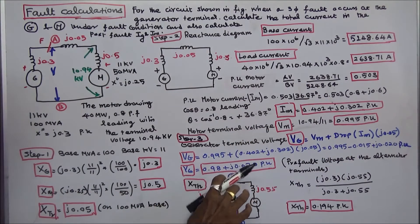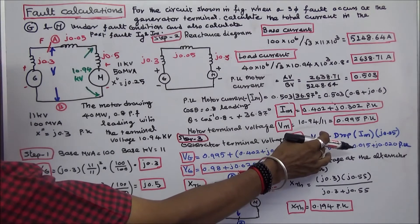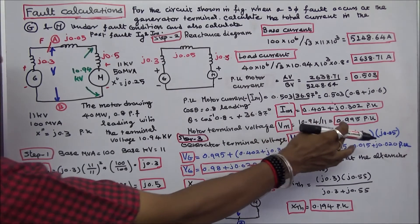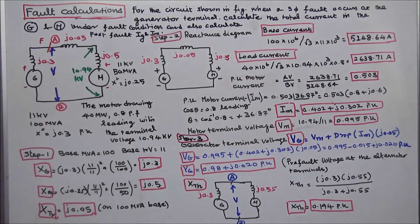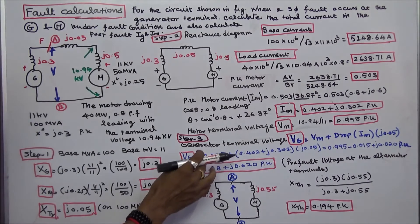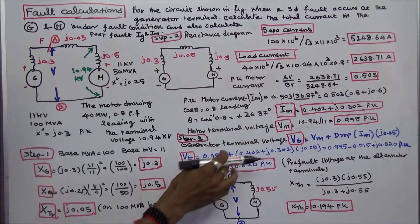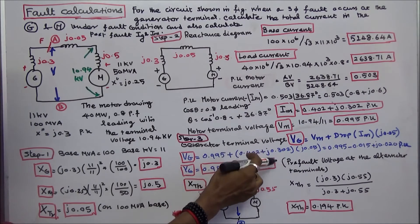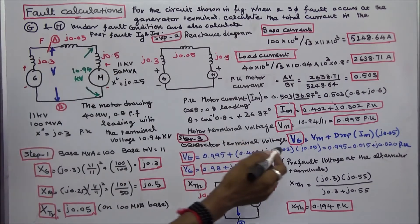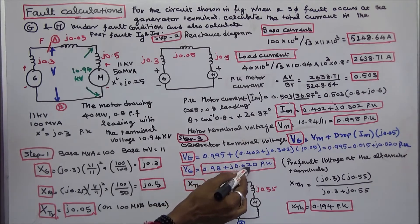Next we calculate the generator terminal voltage. Generator terminal voltage equals motor terminal voltage Vm plus the voltage drop across the line. Drop equals motor current multiplied by line reactance. So generator voltage = 0.995 + (0.402 + J.302) × J.05, giving a generator voltage of 0.99 + J.020 per unit.